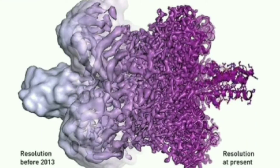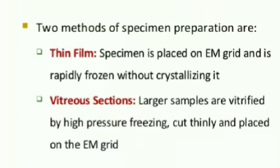The resolution of the electron microscope has been improved in recent years. Earlier, only shapeless blobs were observed, whereas now we are able to visualize proteins at atomic resolution. Now let us discuss the procedure for cryo electron microscopy.